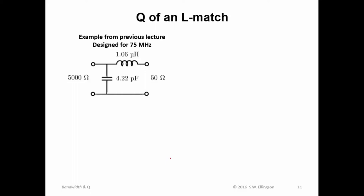Let's apply this to a circuit that we've already seen. This is an example from a previous lecture where we did an impedance match from 5000 ohms to 50 ohms. And one possible way to do that, we found, for a frequency of 75 megahertz, was to arrange an inductor and a capacitor as shown here.